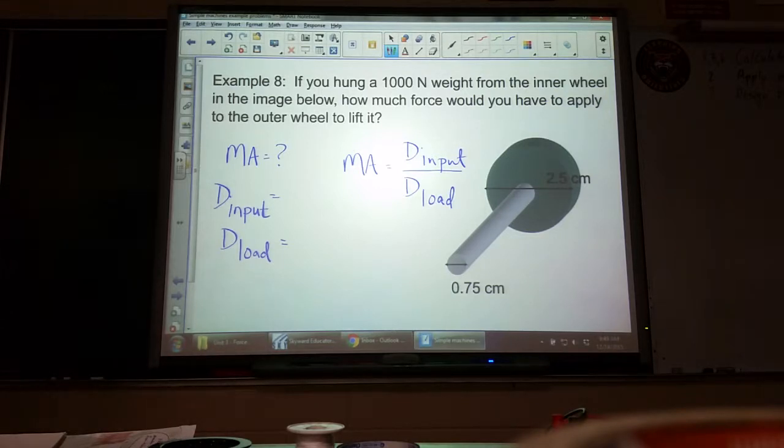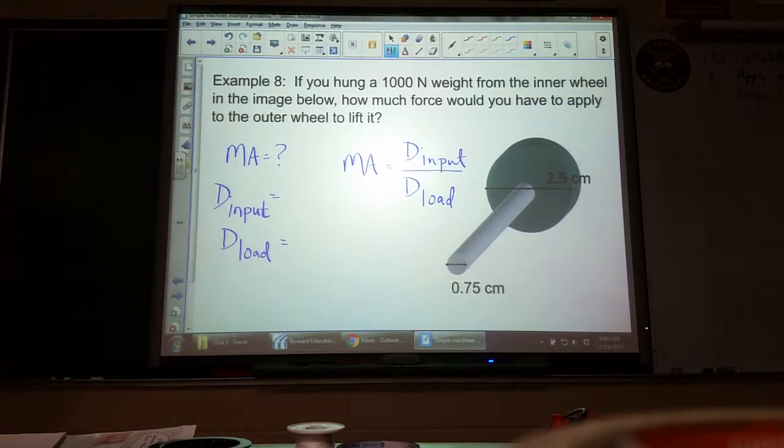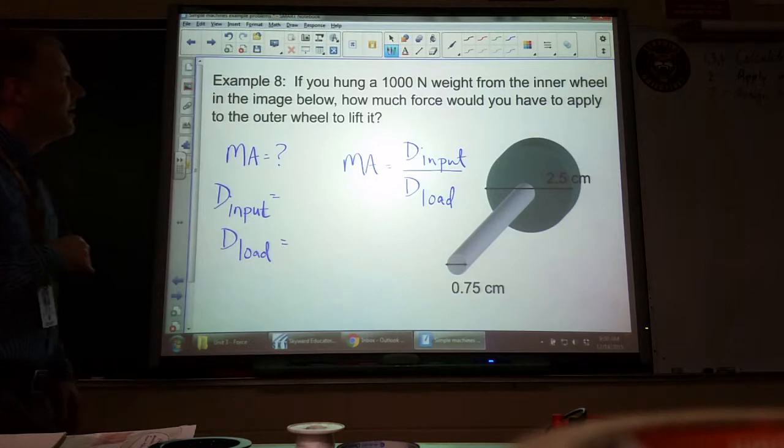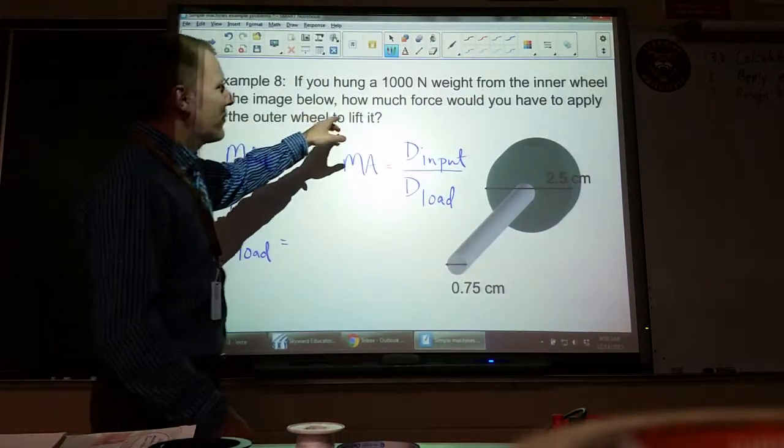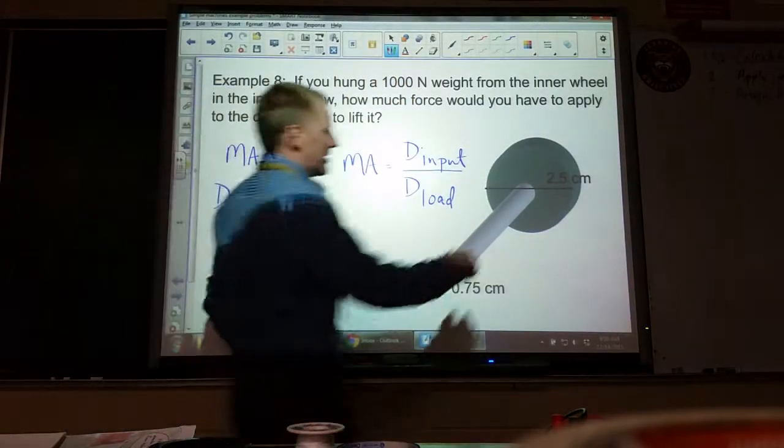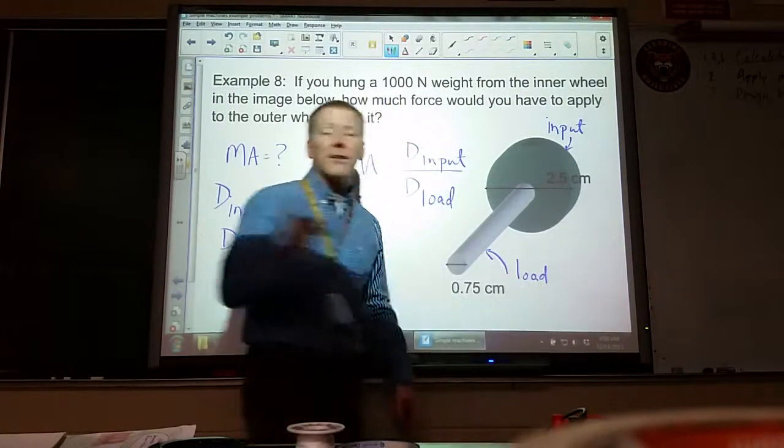So I'm going to find both of those. Which one's input, which one's load? How do you know? Because the previous example... We have to look carefully at the problem to figure out which one's right. We hung a thousand Newton weight from the inner wheel, that makes that the load. And it says how much force would you - that means input - have to apply to the outer wheel. So this outer wheel is the input wheel.